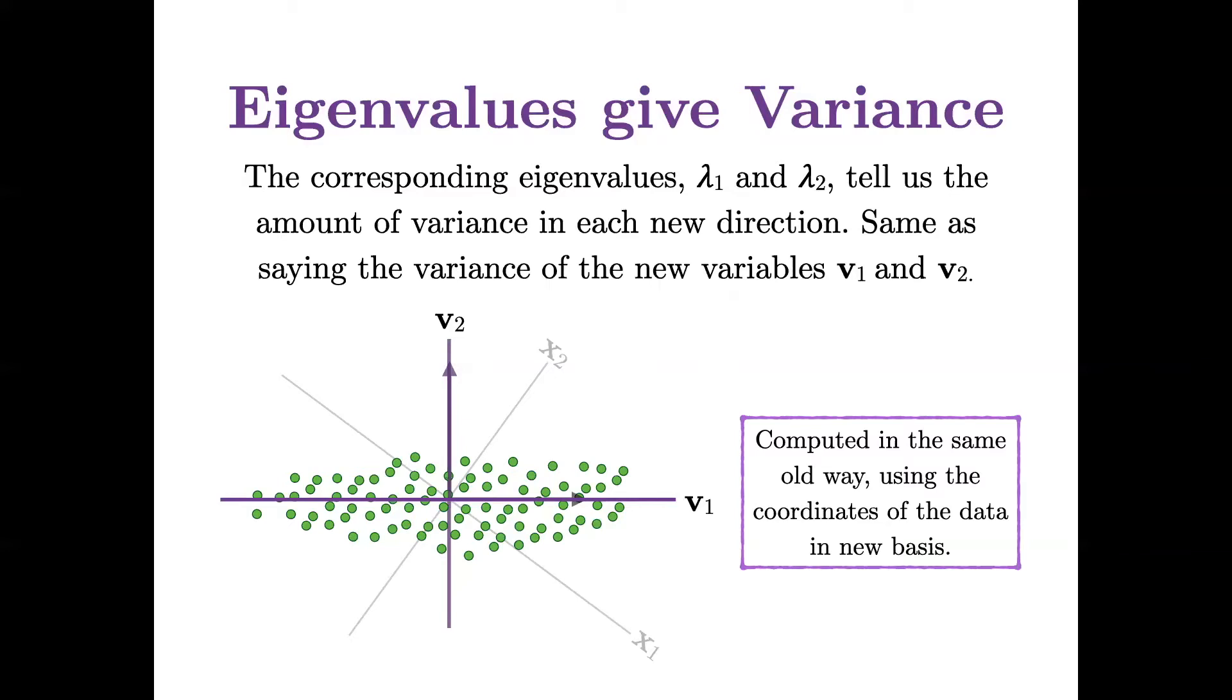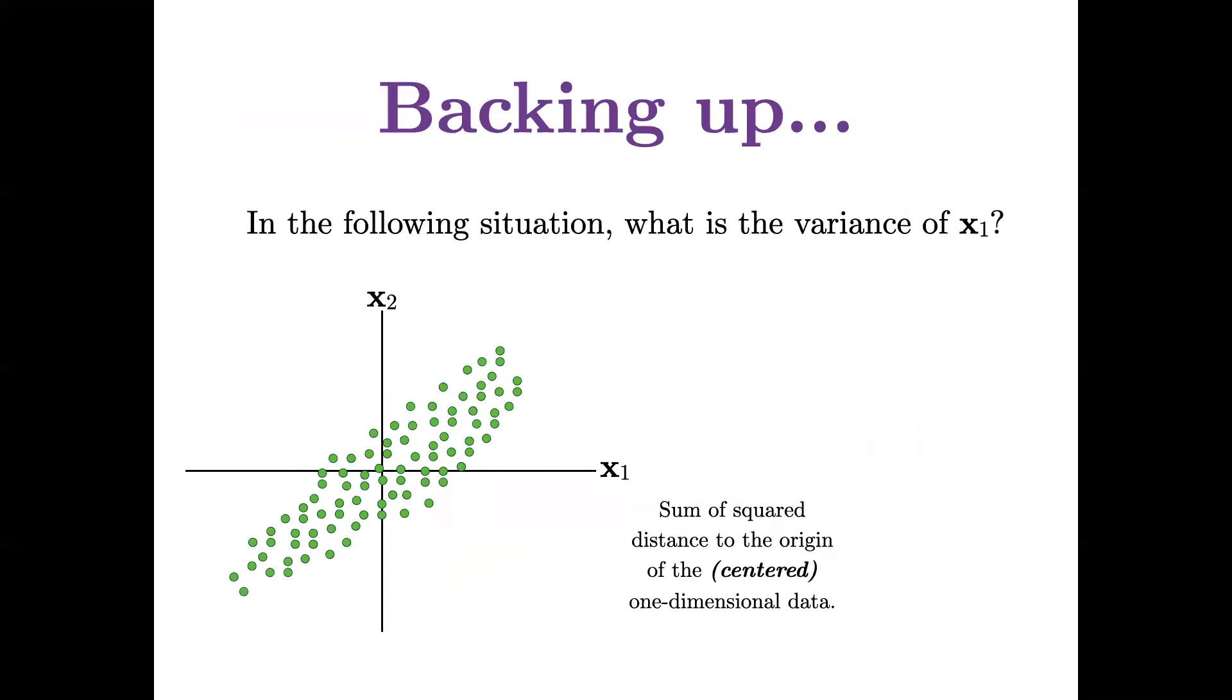And when I talk about the variance in each direction, this is really computed in the same old way. We're just using the coordinates of the data in our new basis. So if that's not clicking, let's back up a second, and just here's some two-dimensional data, I have two variables, x1 and x2. What's the variance of x1?